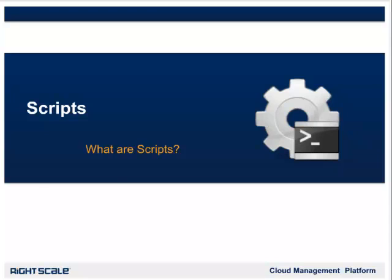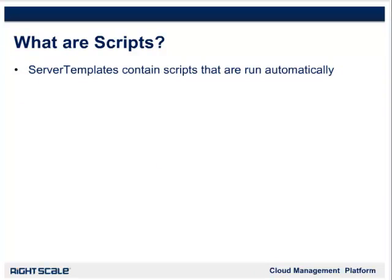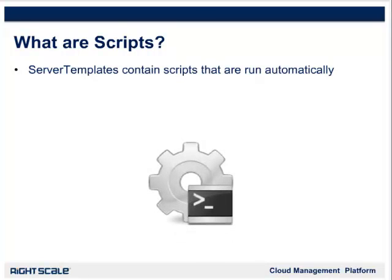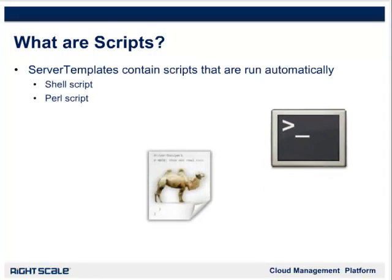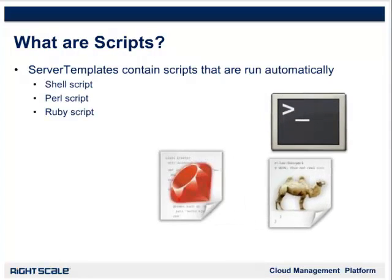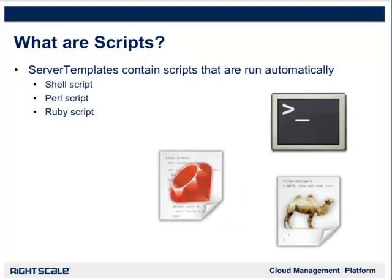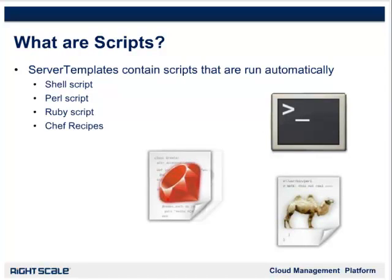Let's take a closer look at scripts in WriteScale. Server templates contain scripts that are run automatically. These scripts come in the form of write scripts, which include any script created in the WriteScale dashboard, and may be a shell script, a Perl script, a Ruby script, etc., or as chef recipes.